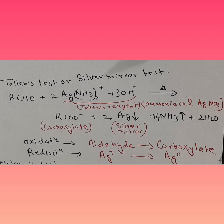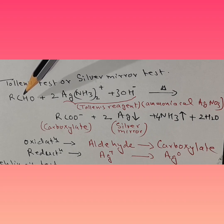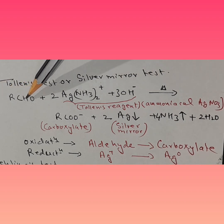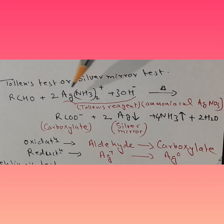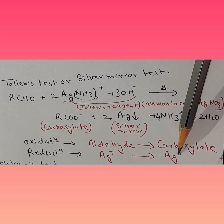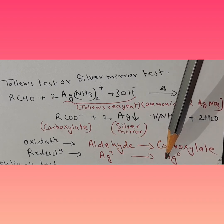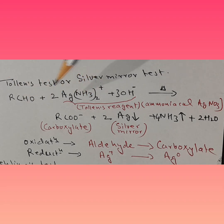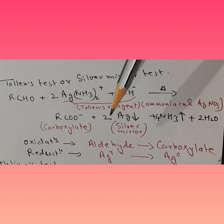Tollens' test, or the silver mirror test, is used for testing the reducing property of a molecule. Here, an aldehyde is reacted with Tollens' reagent — ammoniacal silver nitrate in basic medium, boiled. What the aldehyde does is it reduces silver⁺ ions to silver metal (Ag⁰). We know that gain of electrons is reduction. So if we take sugar and boil it with Tollens' reagent and we see a silver mirror, that itself means the sugar is a reducing sugar.